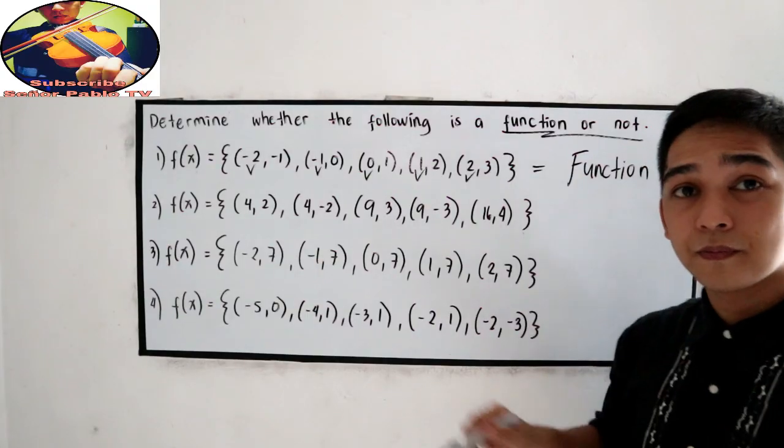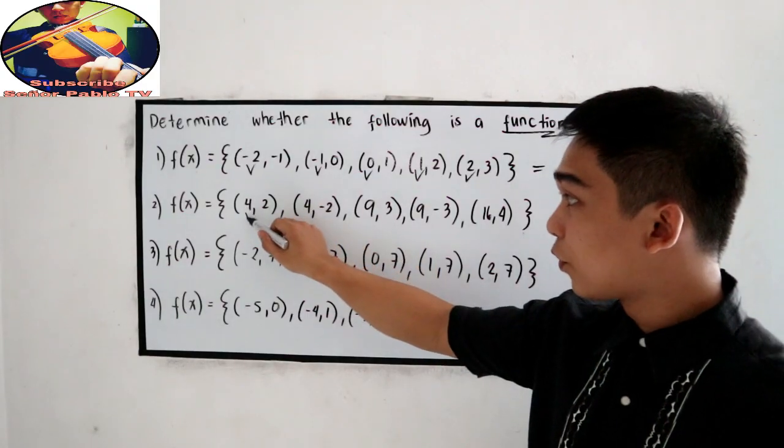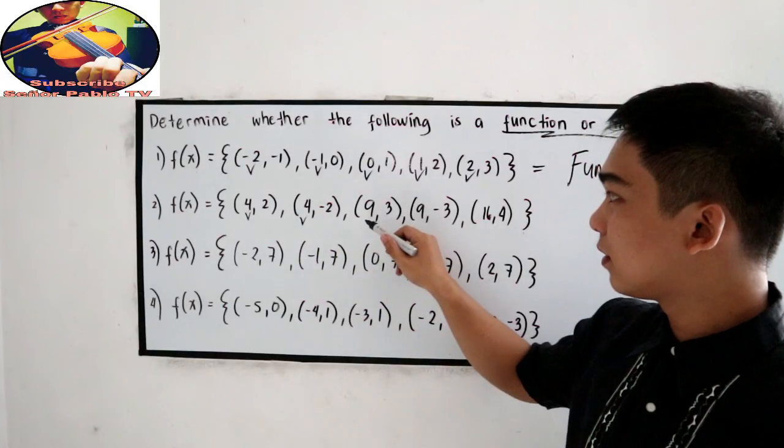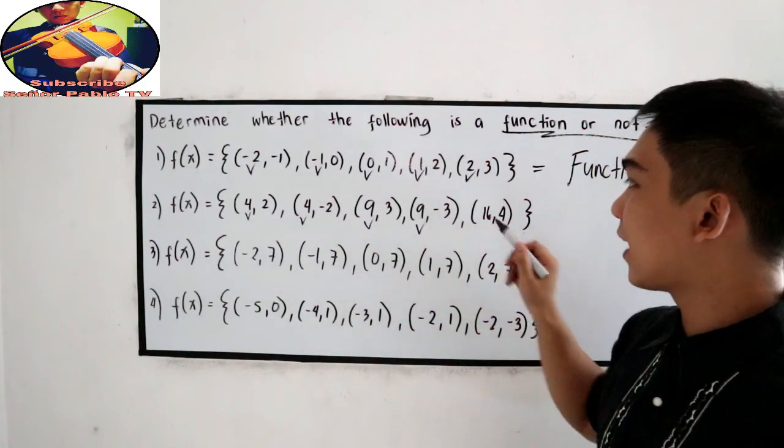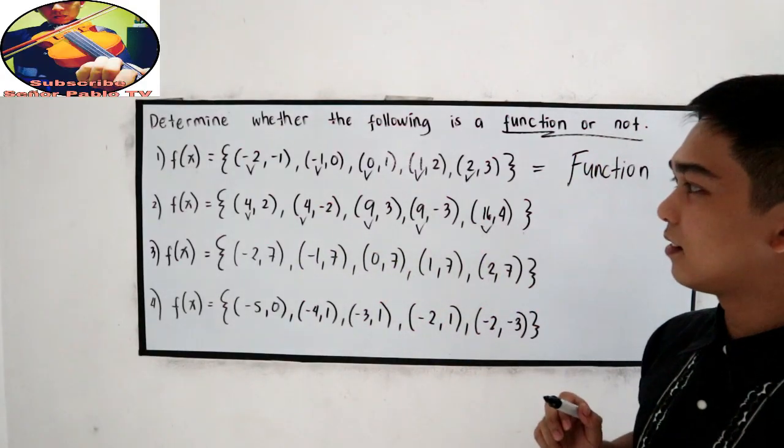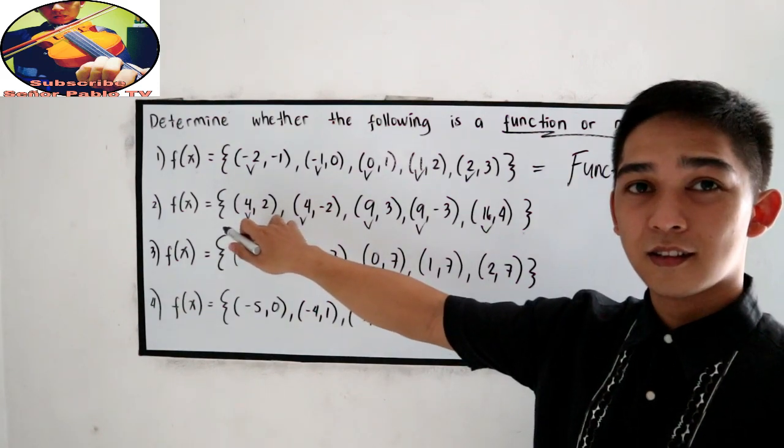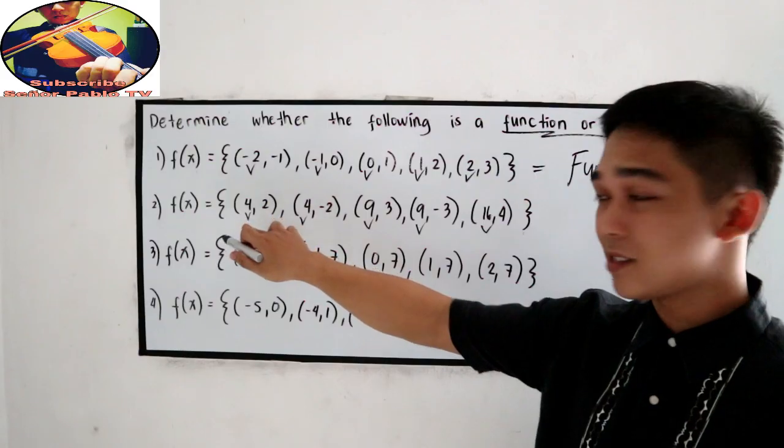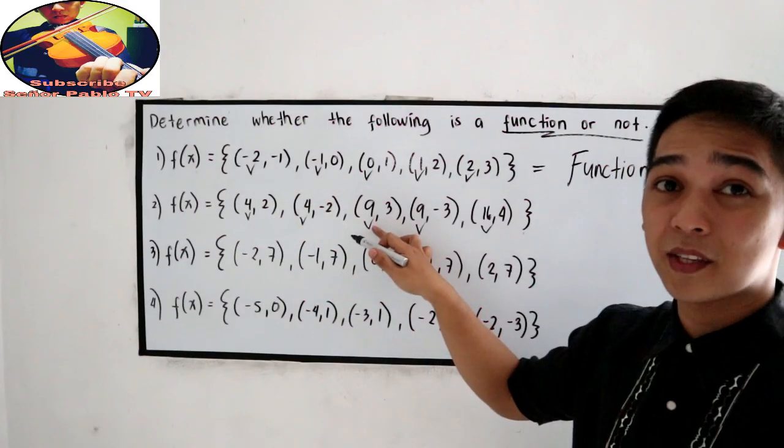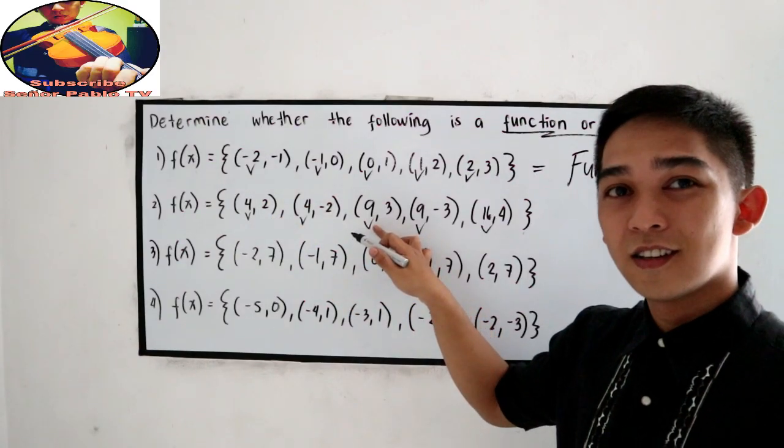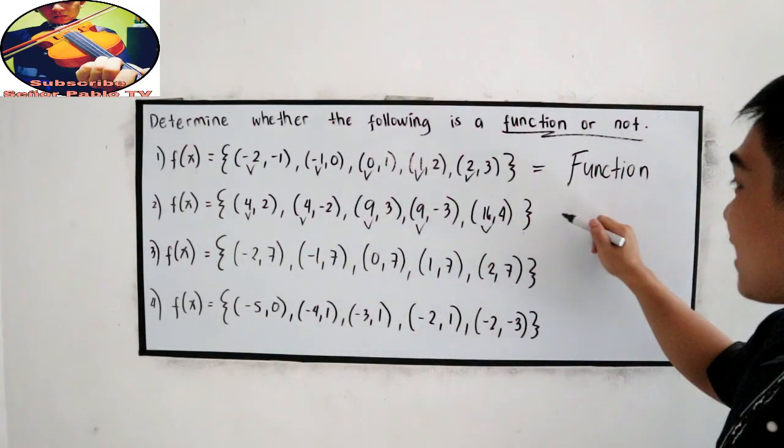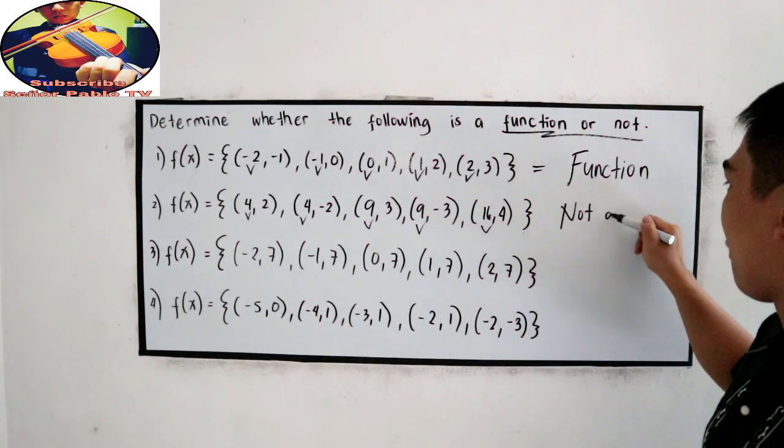Next. 4, 4, 9, 9, 16. 4, 4, that is repeated twice. 9, also repeated twice. So that is, it is not a function.